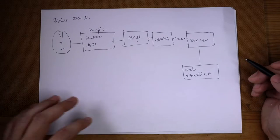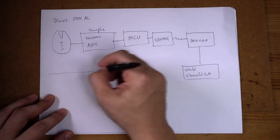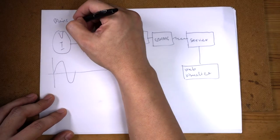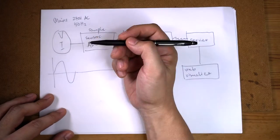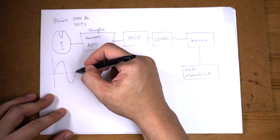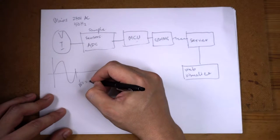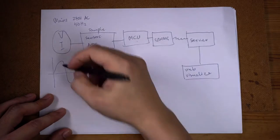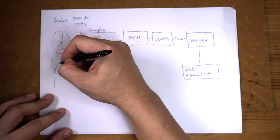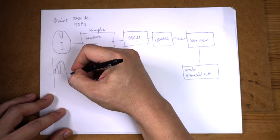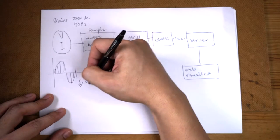A couple of things to consider: this is AC, right? It's 50 Hz where we are, so you get 50 of these cycles — whether voltage or current — per second. Each cycle takes 1/50th of a second, or 0.02 seconds. So your ADC will be taking samples at discrete points in time. If you just take one sample every 0.02 seconds you might catch it at any arbitrary point, and that's just not good.